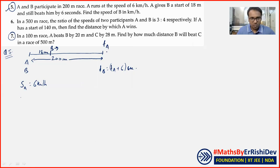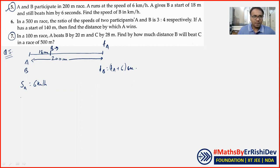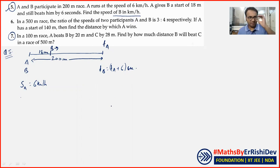یعنی A کو جتنا ٹائم لگا، B کو اس سے 6 seconds زیادہ لگے۔ Find the speed of B in km per hour — بہت ہی اچھا سوال ہے، پیارا سوال ہے۔